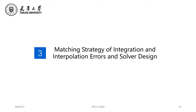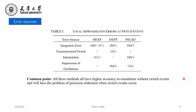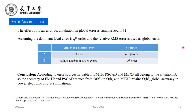In section three, we propose a matching strategy and design solvers based on this strategy. First, we list the error sources of the matrix exponential method, EMTP, and PSCAD. The common point of the three methods is that they all have higher accuracy in simulation without switch events and will face the problem of precision reduction when switch events occur. The effect of local error accumulation on global error is summarized in this paper.